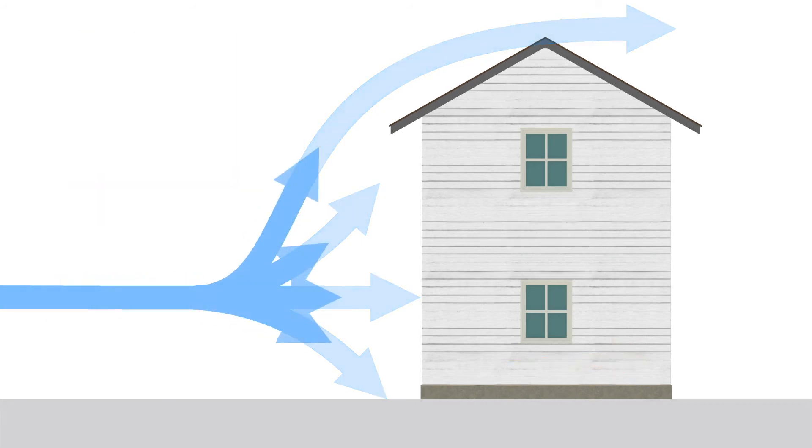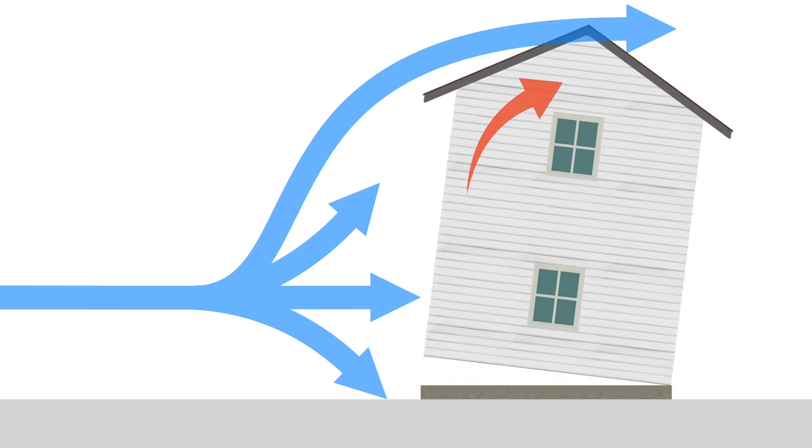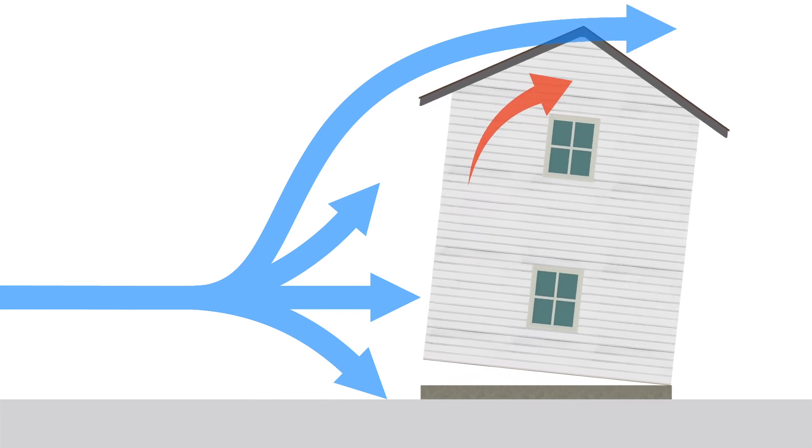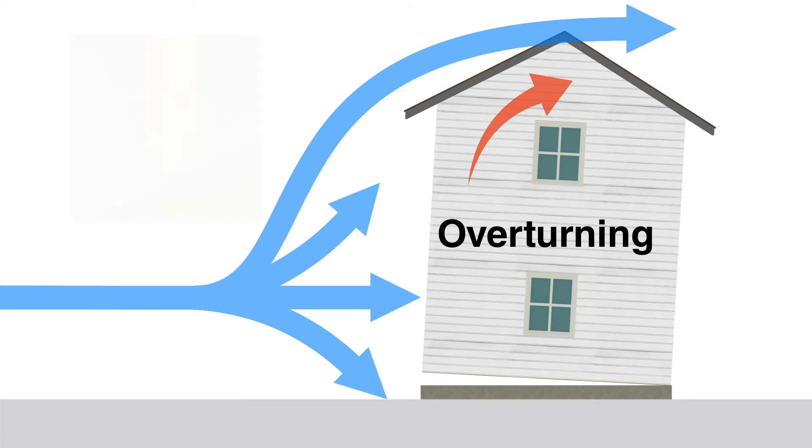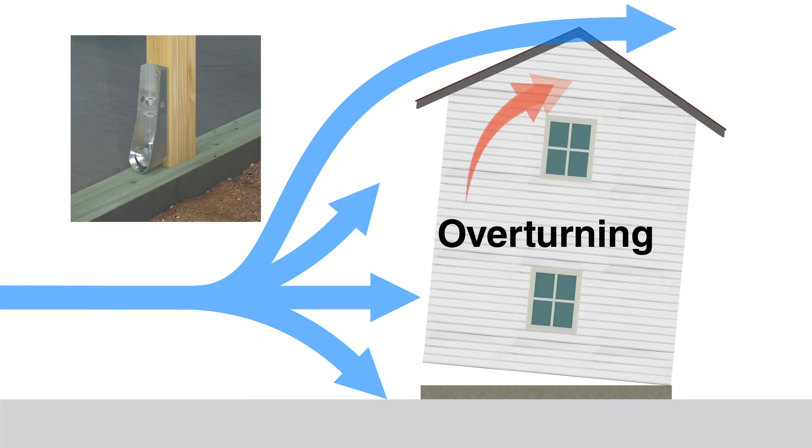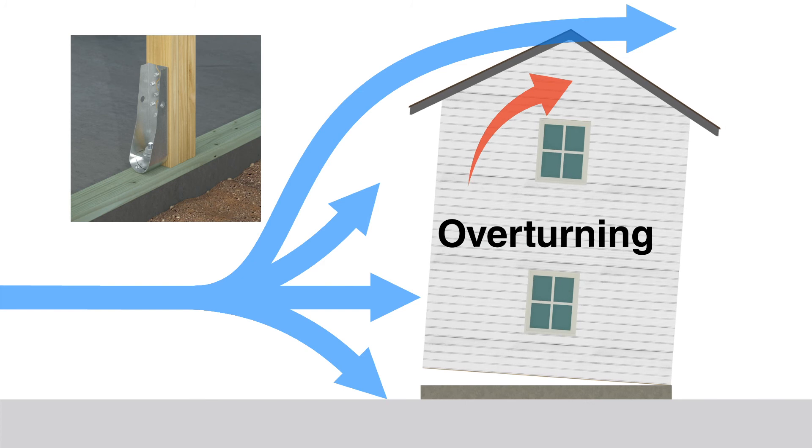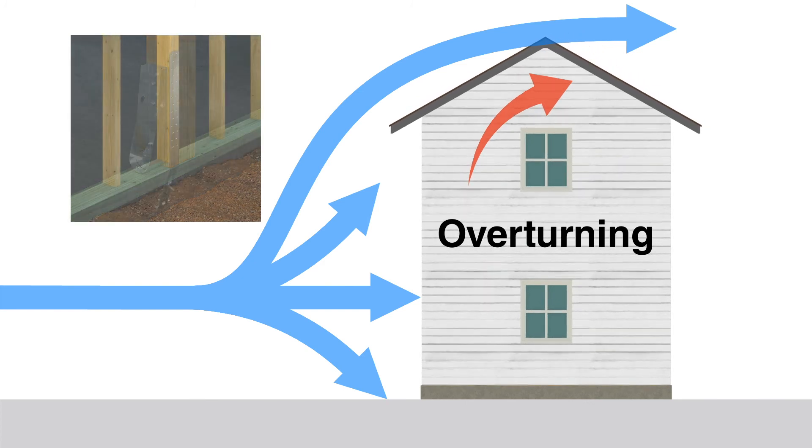If racking and sliding are restrained, lateral forces may cause the house to rotate off its foundation. This is called overturning. Overturning can be resisted by anchoring the walls to the foundation using hold downs or tension ties.